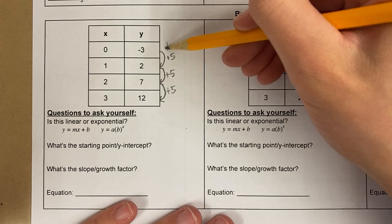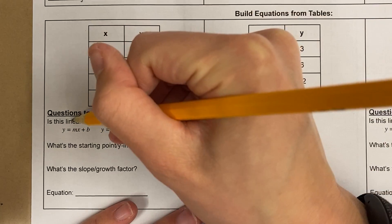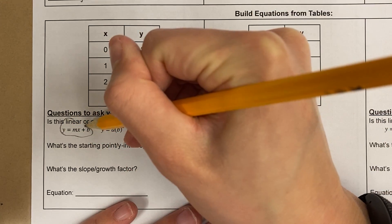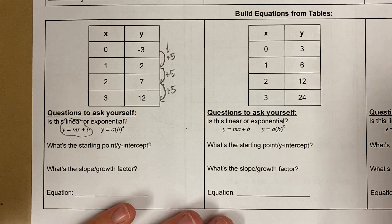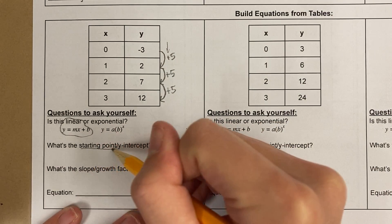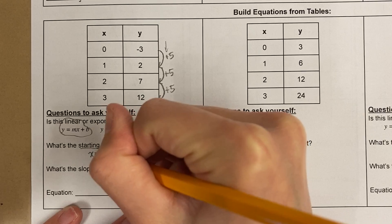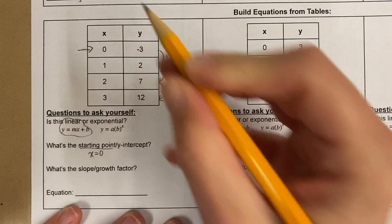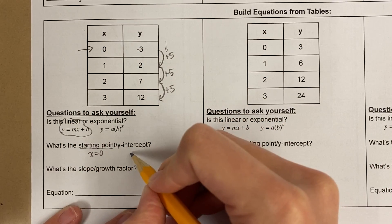So when I think, oh I'm adding, that means this is gonna be linear. Okay, now what's the starting point? The starting point is where x equals 0, right? This one, that's the starting point. So the starting point is negative 3.